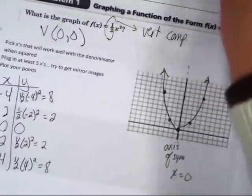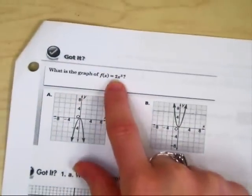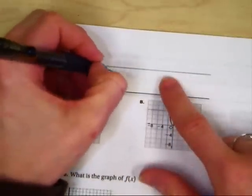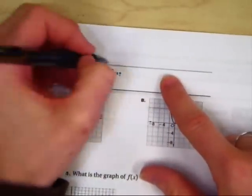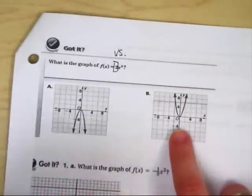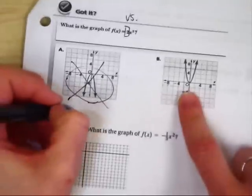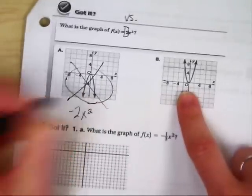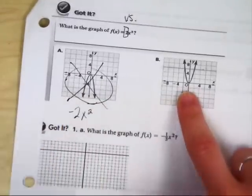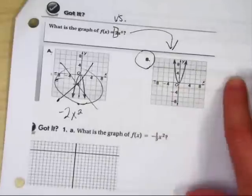Let's try this again. What is the graph of the quantity positive 2 x squared? See the positive 2? That means it's going to be vertically stretched. Well, which of these graphs is vertically stretched? This one's flipped upside down. This one is not it. That's the graph of negative 2 x squared, but not positive 2 x squared. B is our answer. B is the graph of positive 2 x squared.